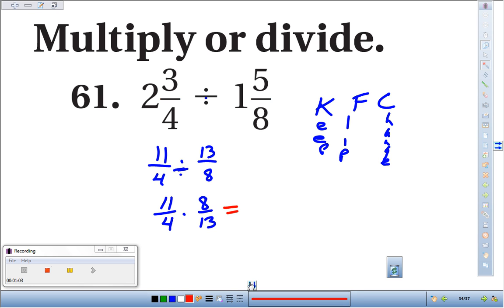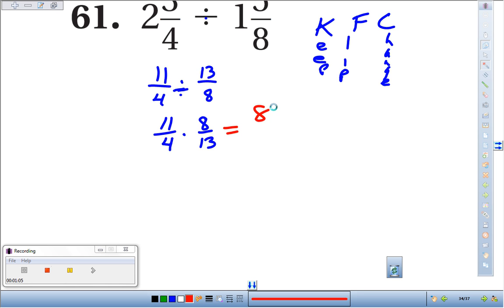So we get 11 times 8 is 88 in the numerator. 4 times 13 is going to be 52 in the denominator. They're both even, so they're divisible by 2. That would reduce to 44 over 26. Still both even. 22 over 13.